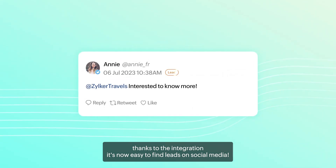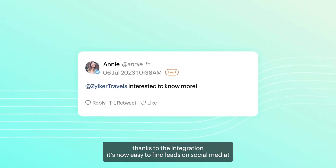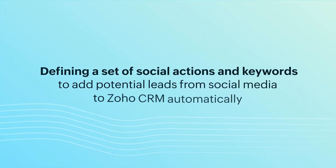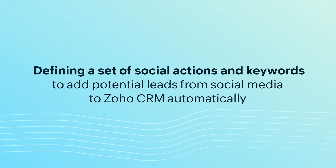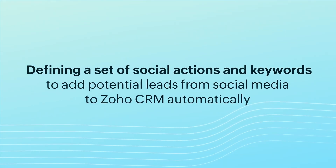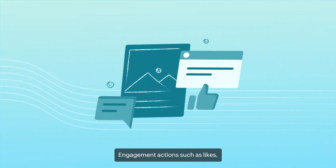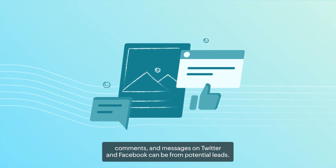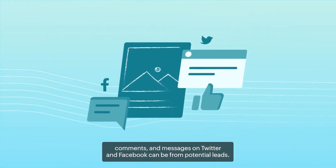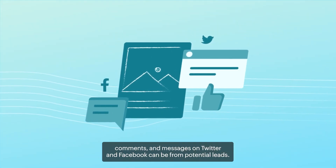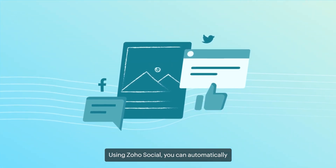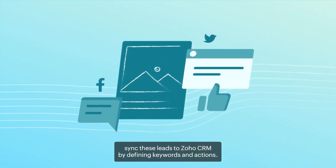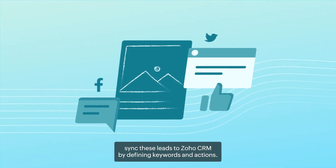It's now easy to find leads on social media. Defining a set of social actions and keywords to add potential leads from social media to Zoho CRM automatically. Engagement actions such as likes, comments, and messages on Twitter and Facebook can be from potential leads. Using Zoho Social, you can automatically sync these leads to Zoho CRM by defining keywords and actions.